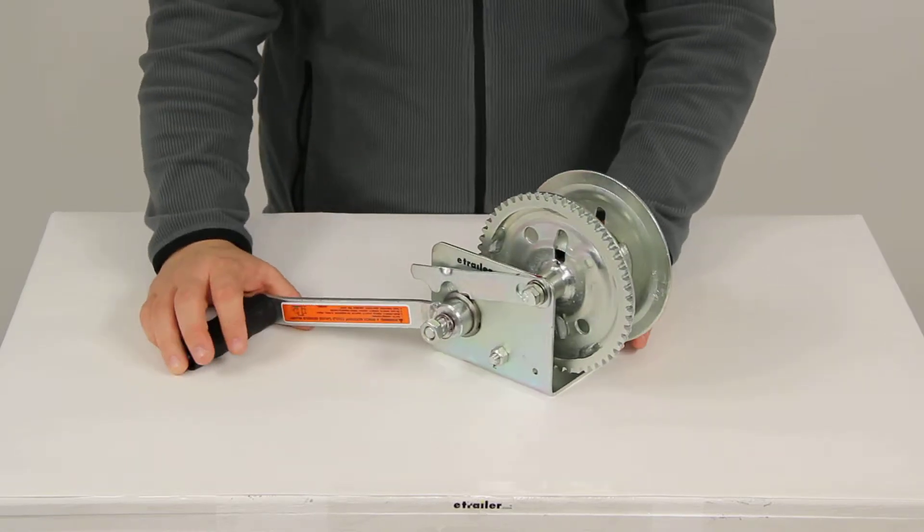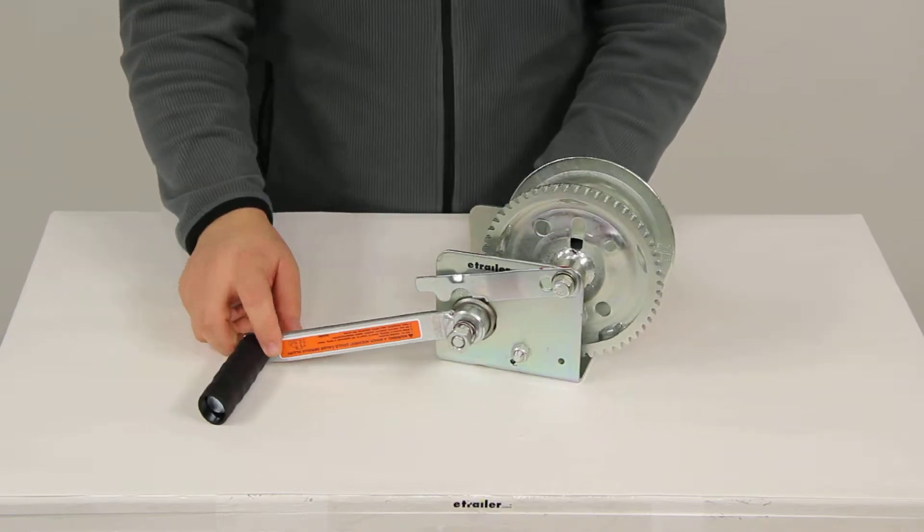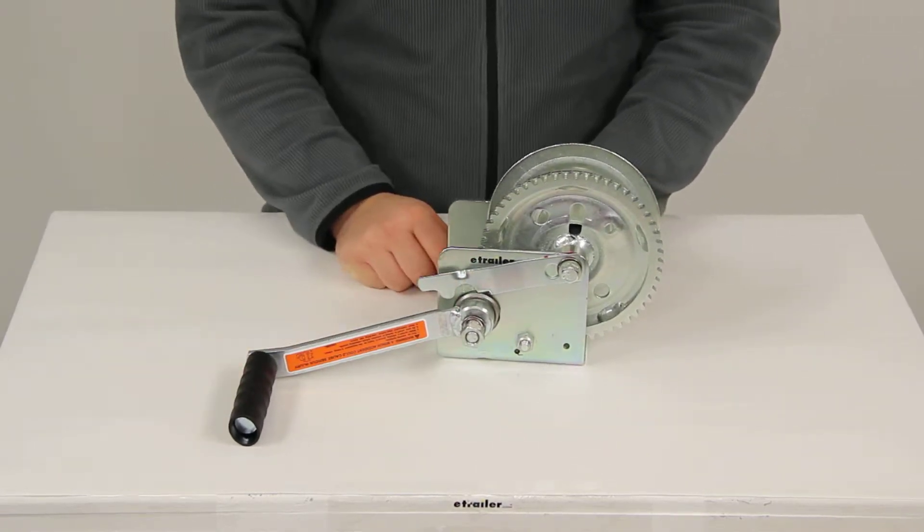This device has a nice zinc tough plate finish so it is going to stand up well against rust and corrosion. The handle is included and from the center of where it mounts to the end of the hand knob is going to measure about 9 and 3/8ths of an inch.